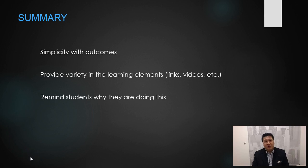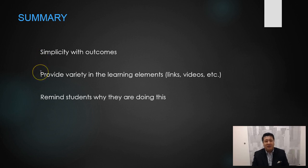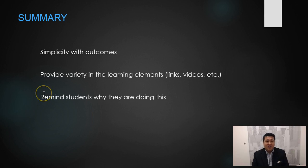I hope this quick tour has given you an example of how the CityU academic model shows up in our classes. A reminder: be simple — simplicity with the outcomes is important; if it's clearly stated and simple, students will easily understand it. Secondly, provide variety in the learning elements — you saw that there were different links, videos, and other things students can click through. Finally, remind students why they are doing this, showing them clearly in the outcomes how it's linked to their learning.